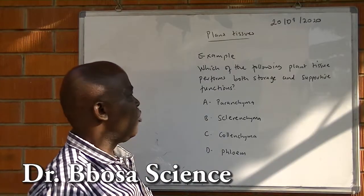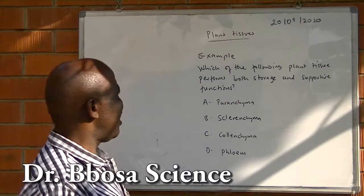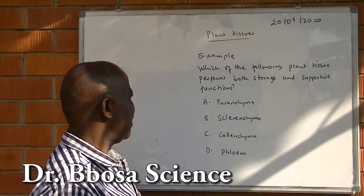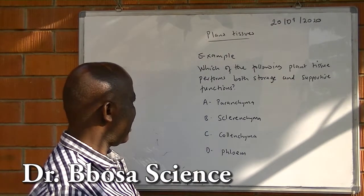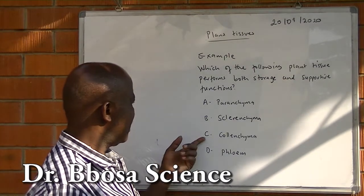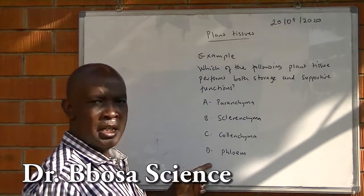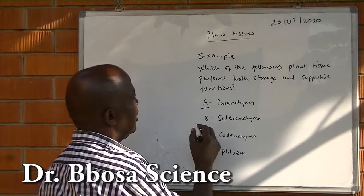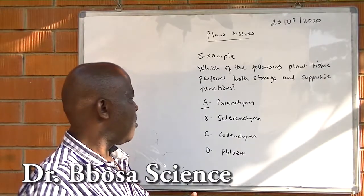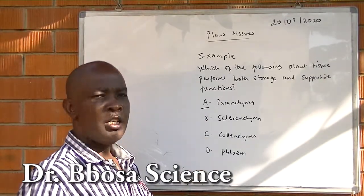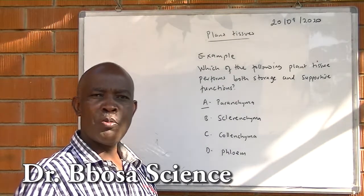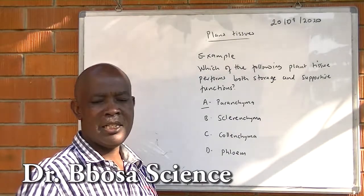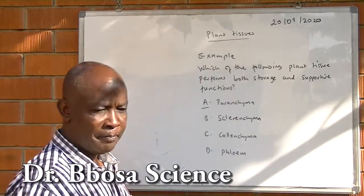Example: which of the following plant tissues performs both storage and supportive functions? A. Parenchyma, B. Sclerenchyma, C. Colenchyma, D. Phloem. The answer is A. Parenchyma tissue stores starch and also provides support to herbaceous plants.